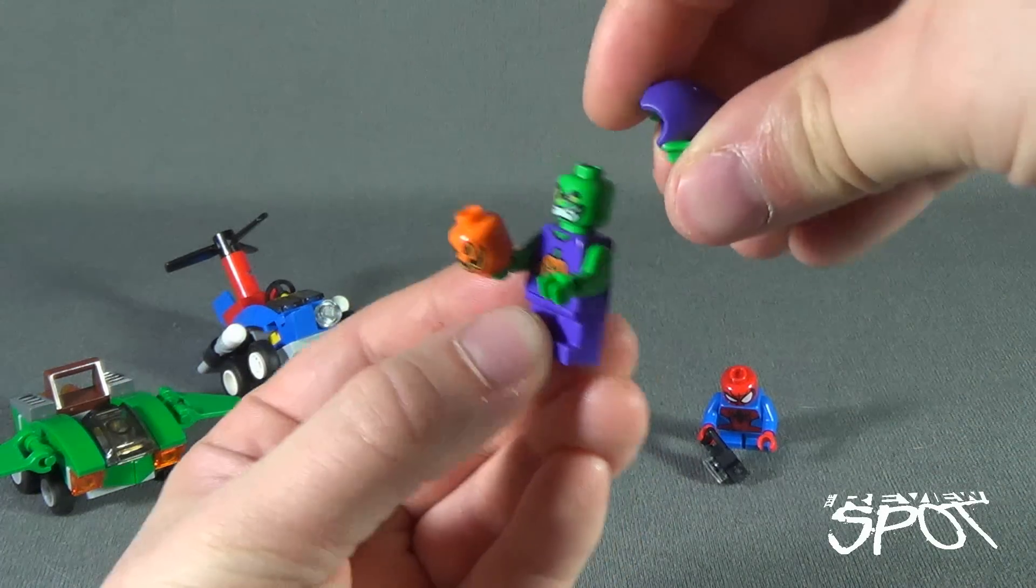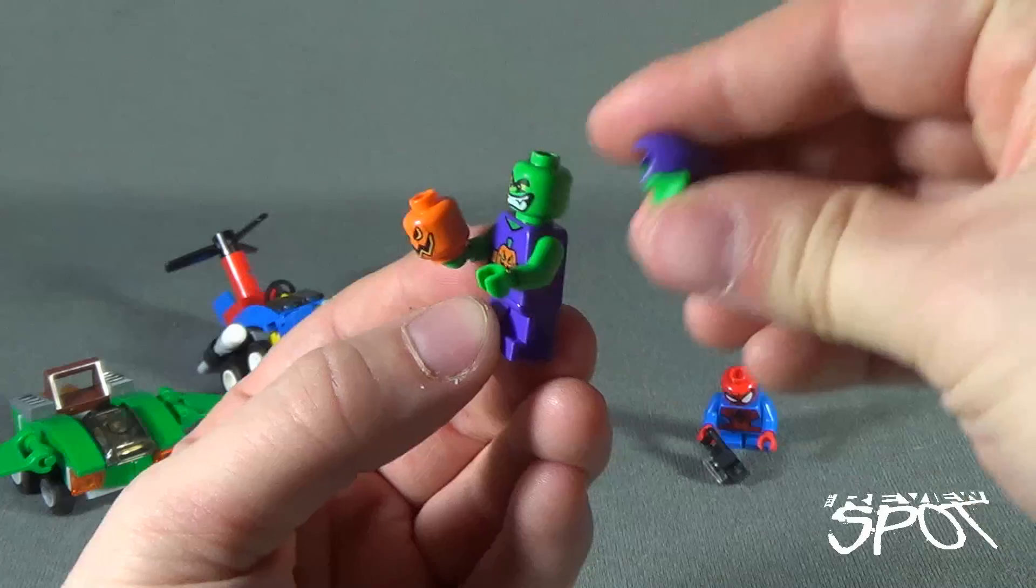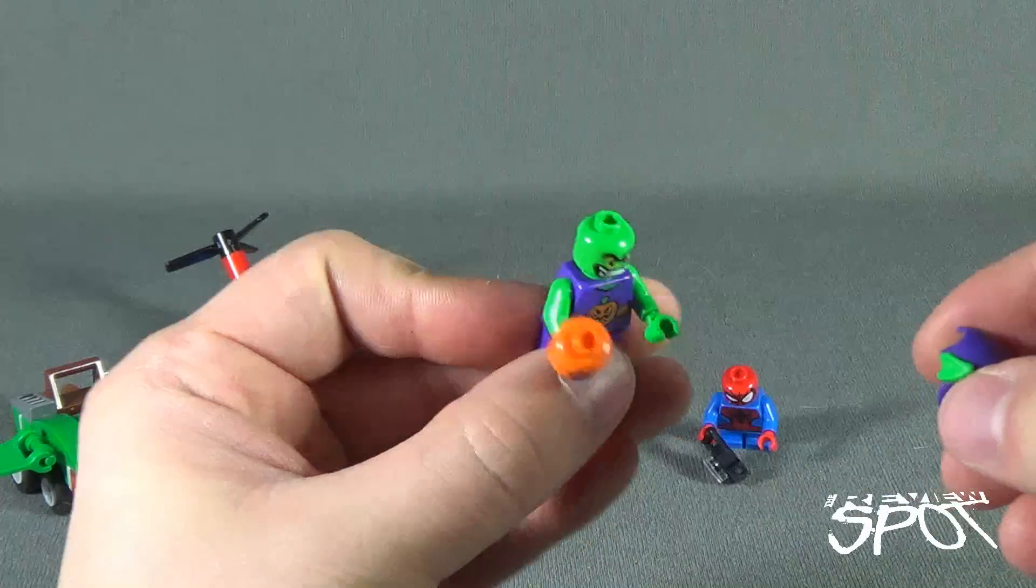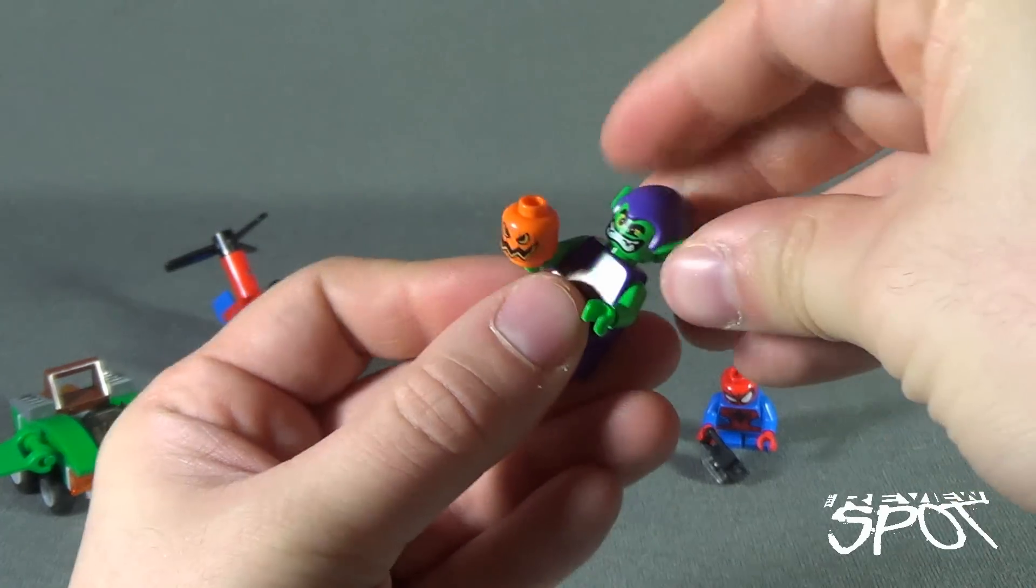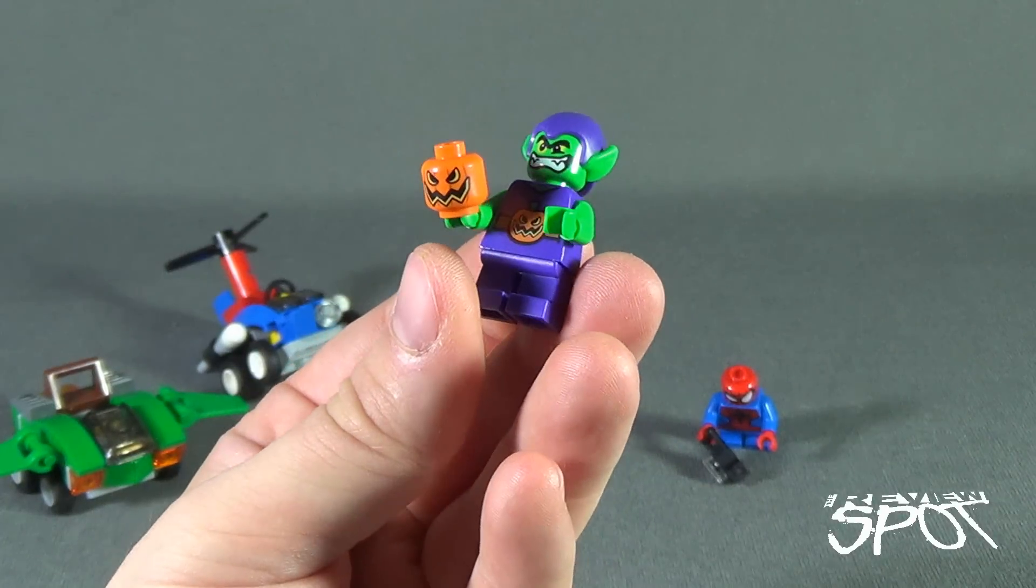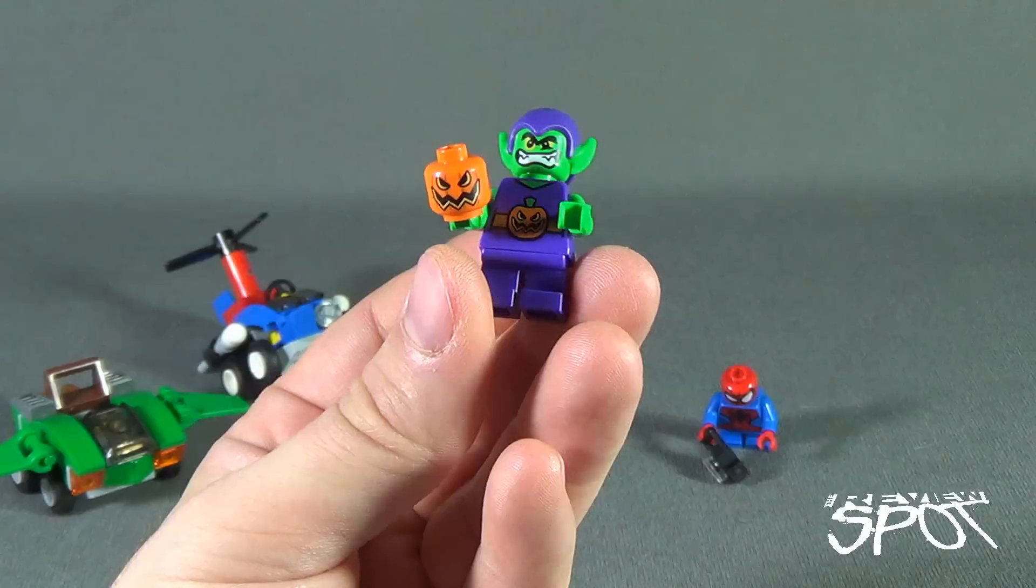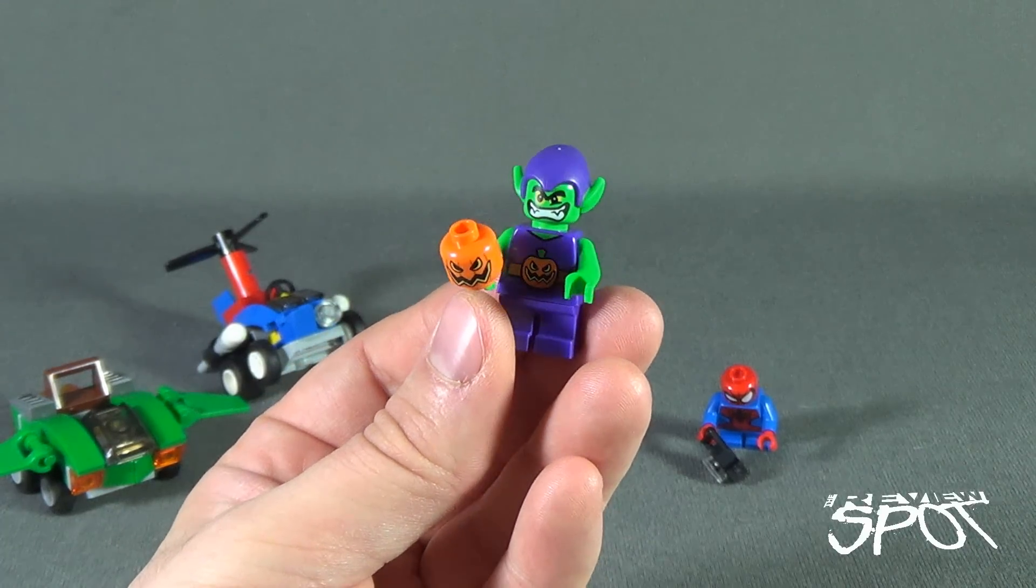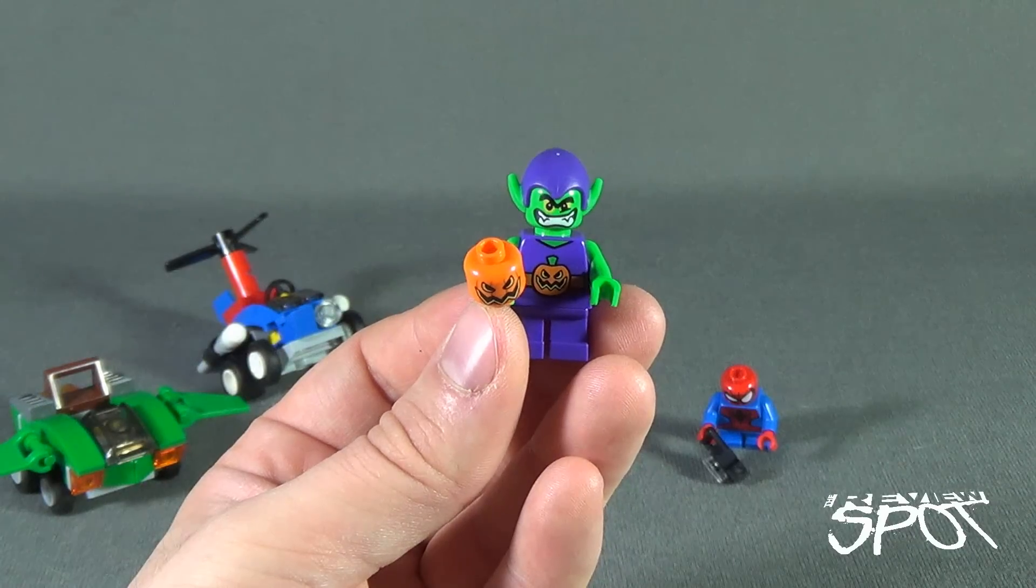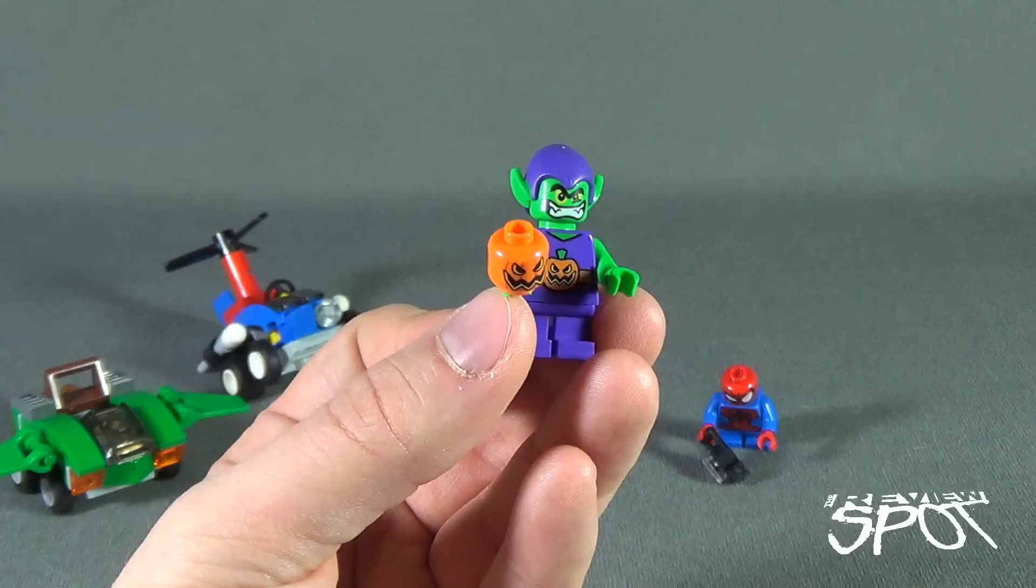I love this Green Goblin though. He's got a little goblin hat with ears. Only one thing - a single face print. He only has the one and he does also come with a pumpkin bomb, which I guess really is a minifigure head you could use for maybe making like a jack-o'-lantern minifigure as well.